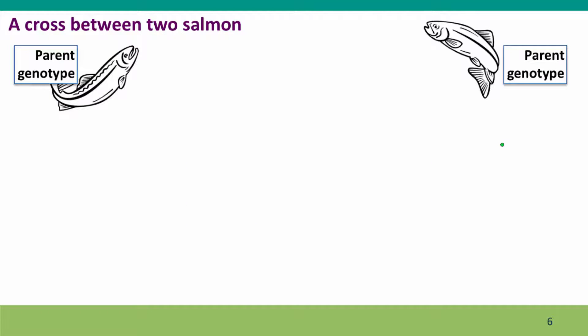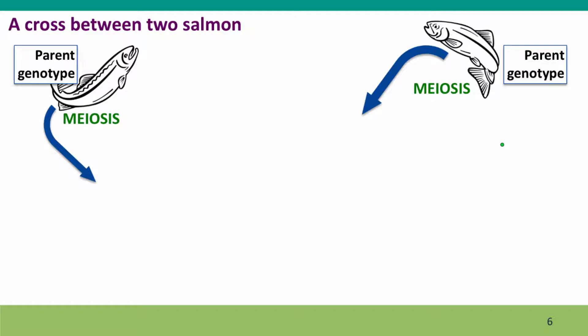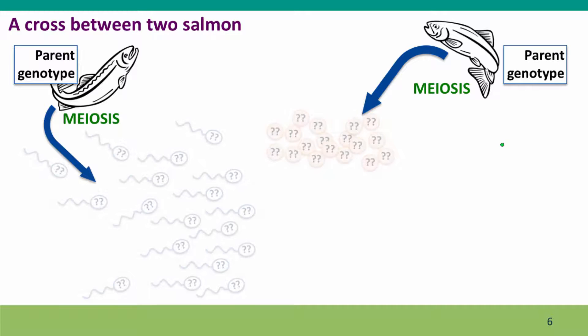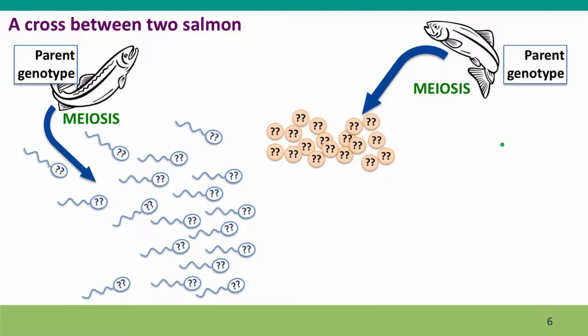We're going to think about it first with fish. We're thinking about fish because it's easier to think about gametes coming together randomly — fish males and females both produce large numbers of gametes and release them into the water, where eggs and sperm randomly encounter each other. So it's easier to think about the events that we need to analyze.